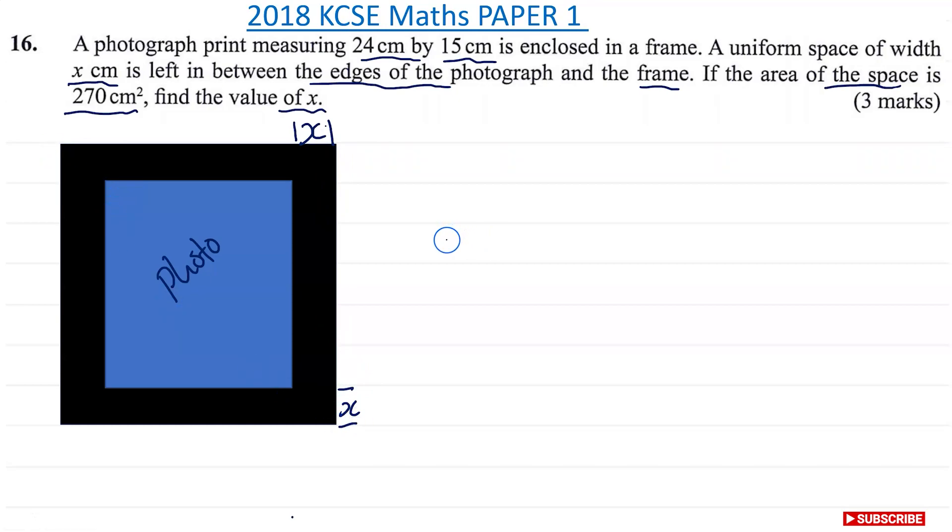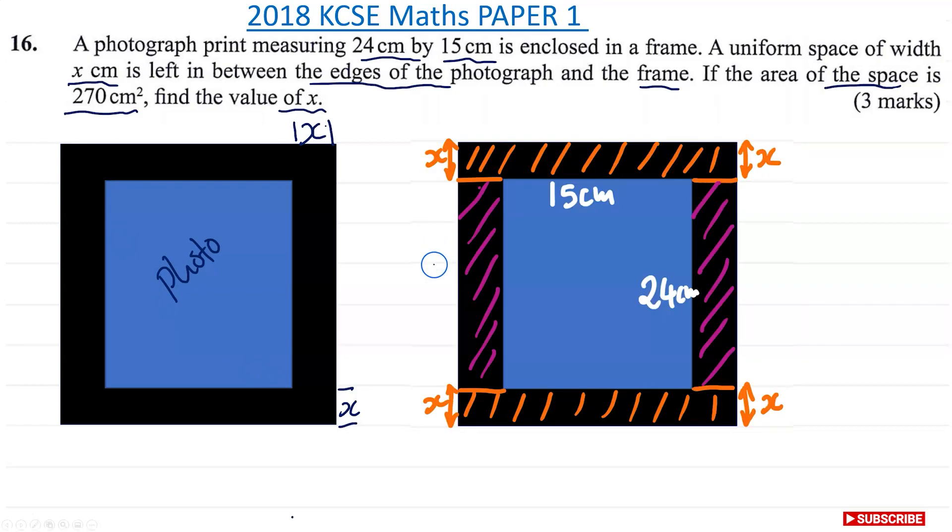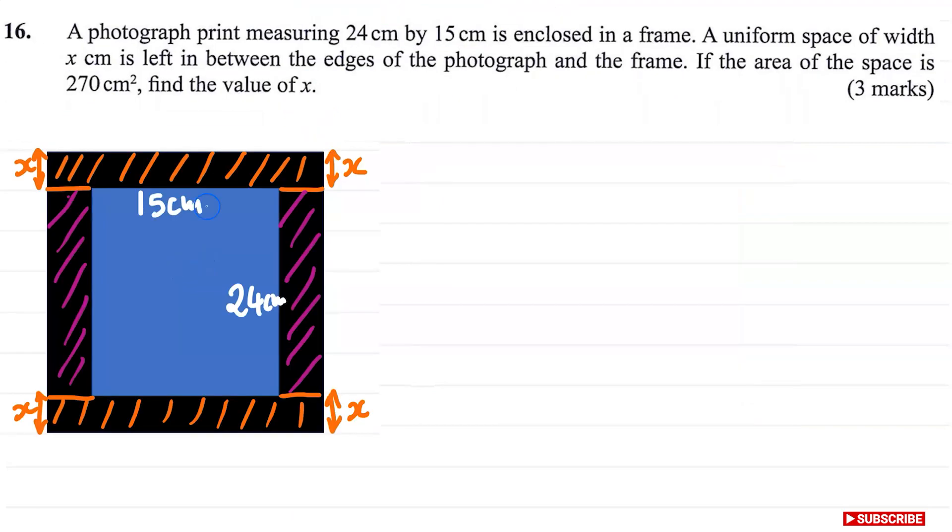So I've done a little bit of a sketch that looks like this. Our photograph is 15 times 24 and then I've divided these areas into orange and purple. So we need to find all these areas and that's going to be equal to 270. We're going to make use of algebra. So we're going to write the equation and then find the value of x. So if we start with the orange area.